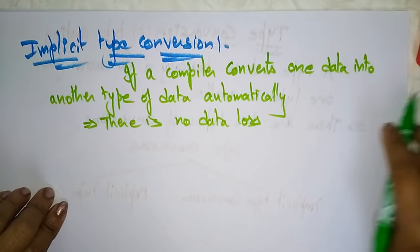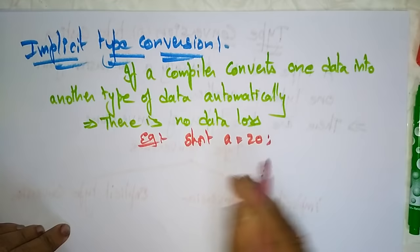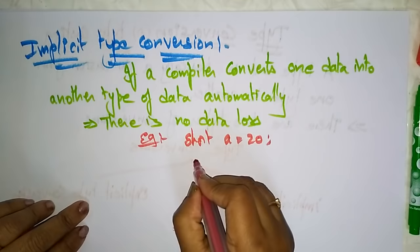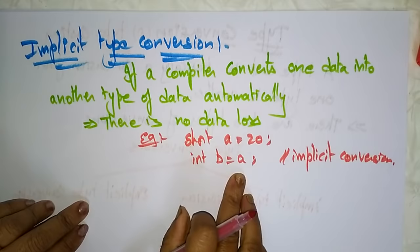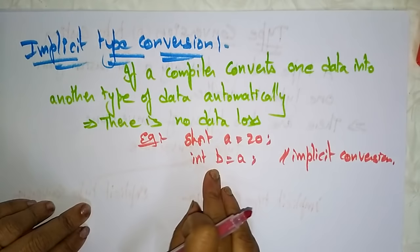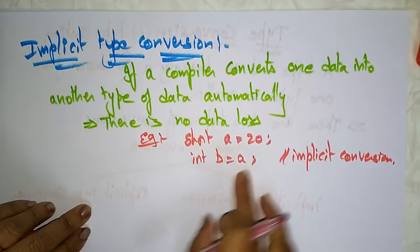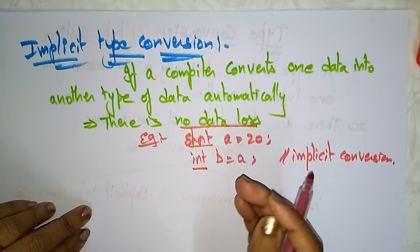For example, take 'short a = 20'. Now doing implicit conversion: 'int b = a'. Here, a is a short data type but we're assigning it to an integer. You can assign a smaller range value to a larger range value, which is done automatically with no data loss, because a has a smaller range than b.